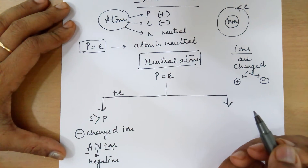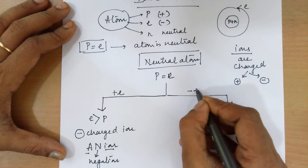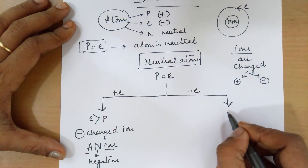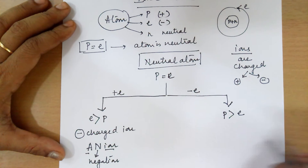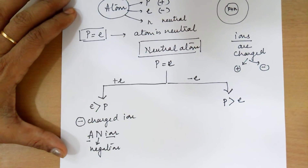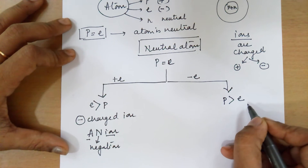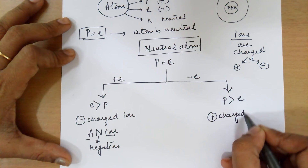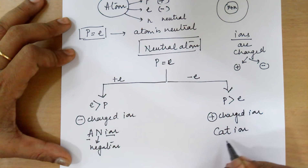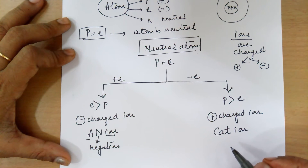The other way of formation of ions is the loss of an electron. On losing an electron, protons now would be more than the electrons. The loss or gain of electron can be more than one, but we are presently talking about a single electron loss or gain. Protons being more than electrons means total positive charges are more than total negative charges. Hence, we end up in a positively charged ion called a cation. The easy way to remember is: cats have powers — so cations are positively charged.